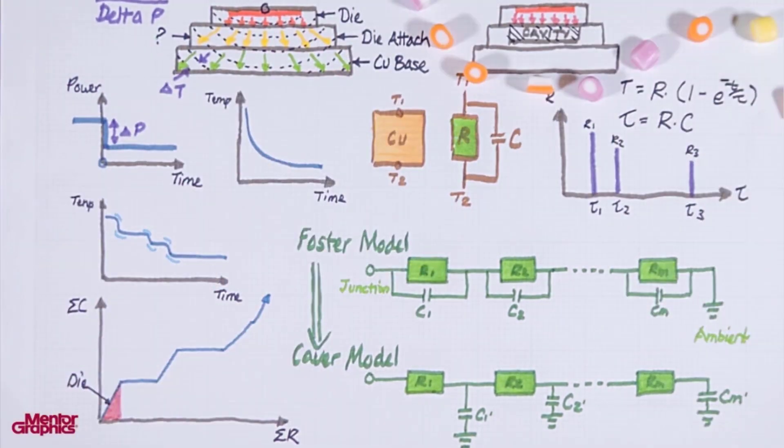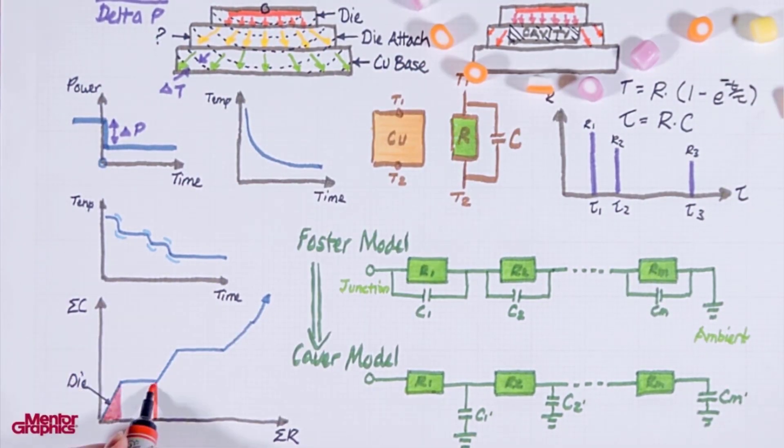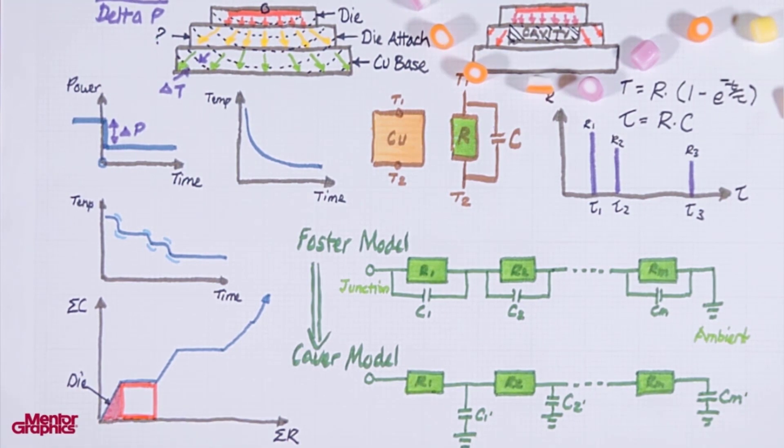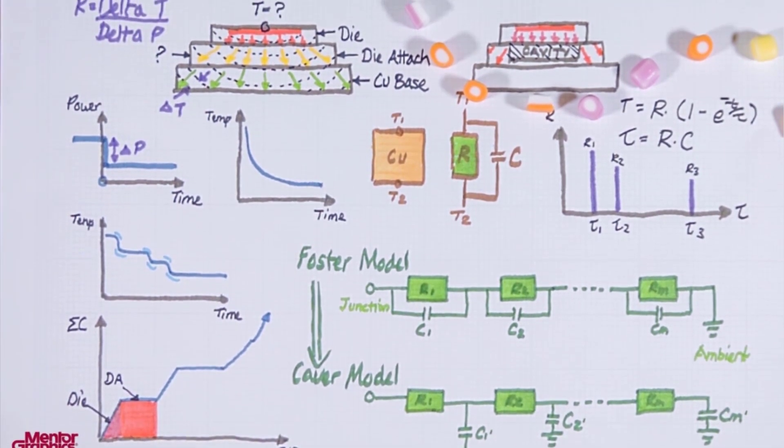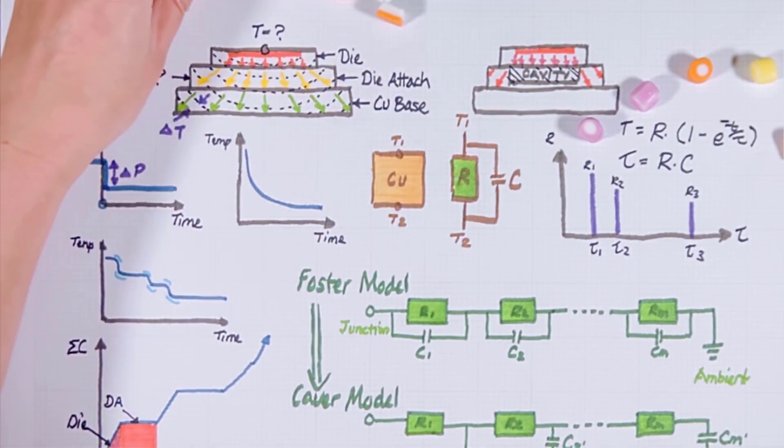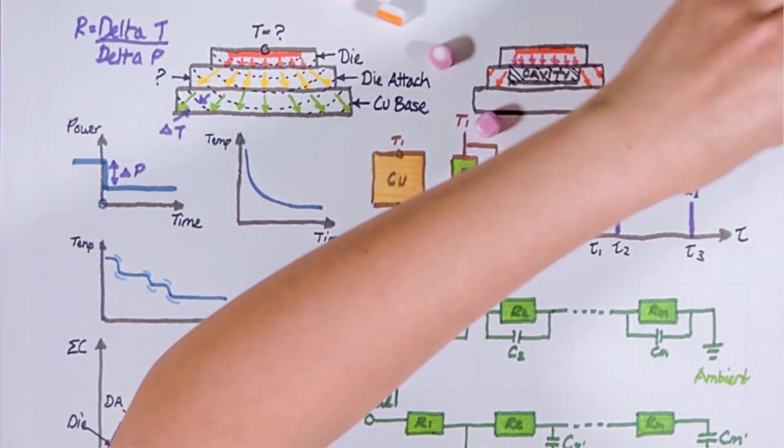When we move into the die attach which is very small so it doesn't store too much heat but the thermal resistance is bigger especially with the cavity there we start to add more resistance. R is big so the line flattens out. The length of this part of the curve will be in direct relationship with the size of the cavity in the die attach.